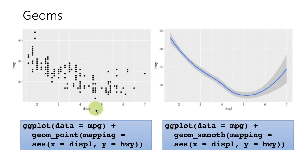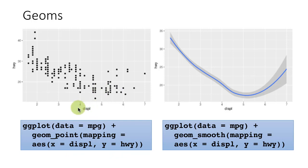The plot on the left was generated using geom_point, which is what generates a scatter plot. Displacement is mapped to the x-axis and highway mileage is mapped to the y-axis. The plot on the right uses everything exactly the same, except that instead of geom_point, we are using geom_smooth.